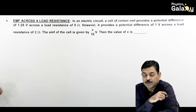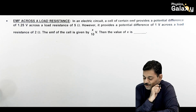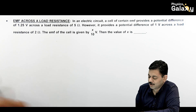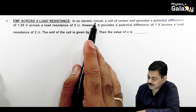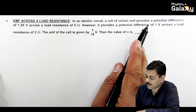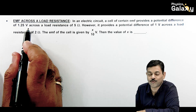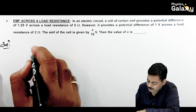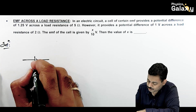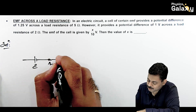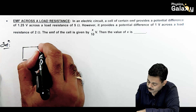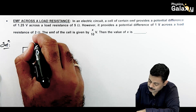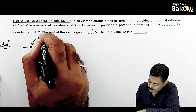Now we will discuss EMF across a load resistance. In an electric circuit, a cell of certain EMF provides a potential difference of 1.25 volt across a load resistance of 5 ohm. The cell has an internal resistance r, and across the 5 ohm load the terminal voltage is 1.25 volt.